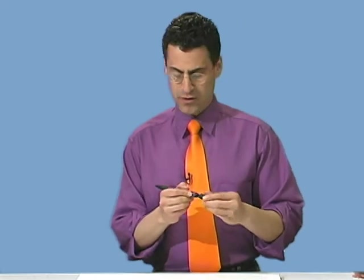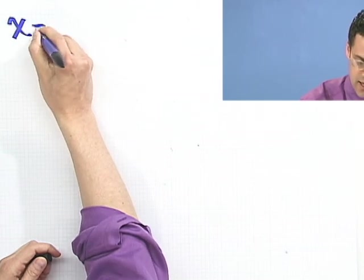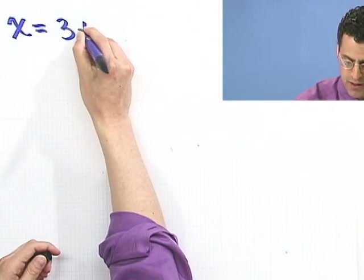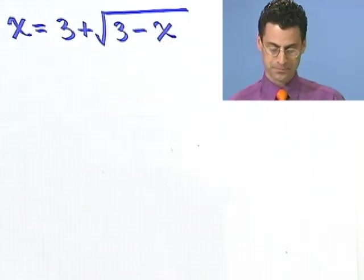This one's going to be even a little bit more eclectic. Because this one looks like this: x equals 3 plus square root of 3 minus x. Now let me tell you why this is eclectic. You're saying, gee, it looks like the exact same thing as the other one. Well, let's just think through this.